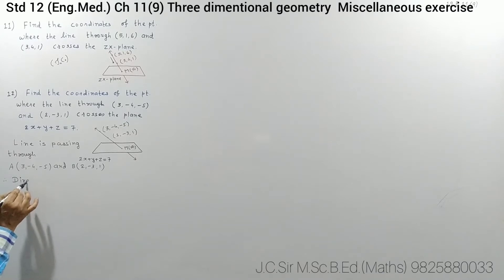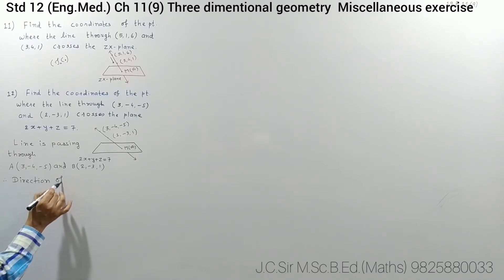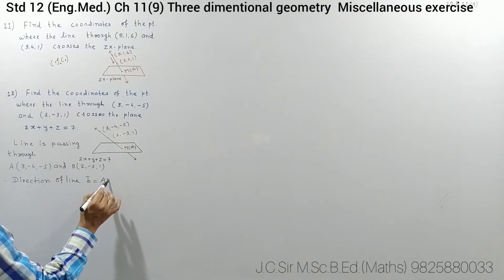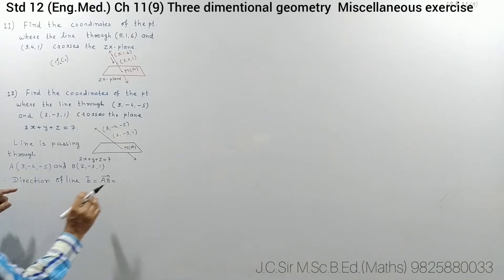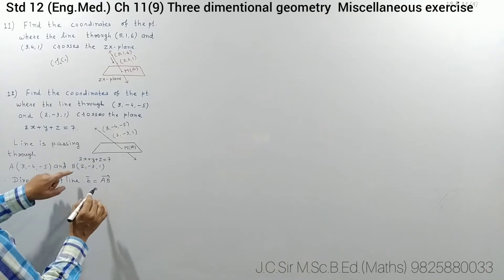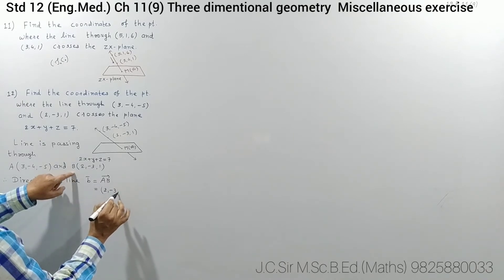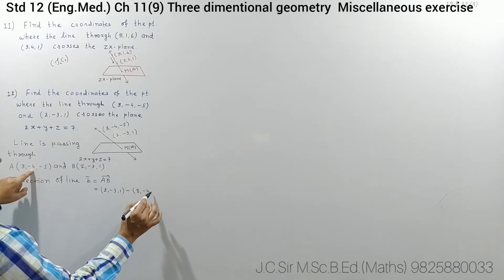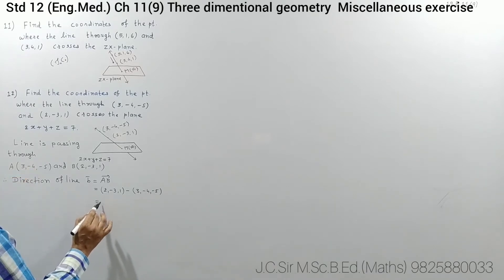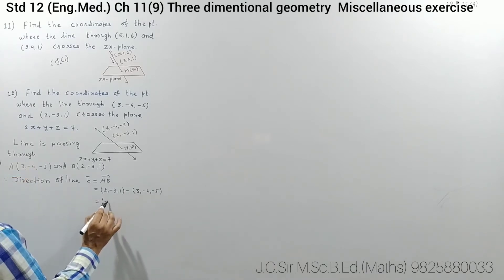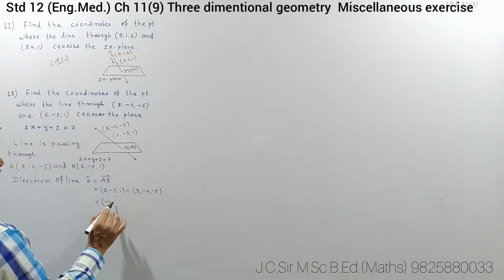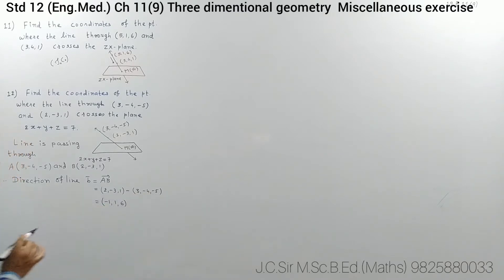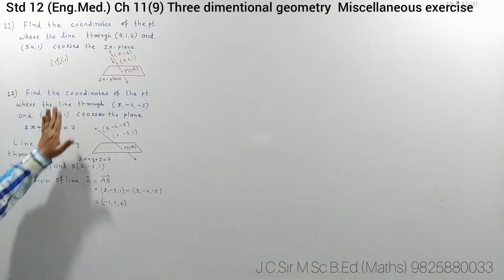First of all, find the direction of the line. Line is passing through A(3,-4,-5) and B(2,-3,1). Therefore, direction vector AB bar is position vector of B minus position vector of A: (2-3, -3-(-4), 1-(-5)) = (-1, 1, 6). So this will be the direction of the line.